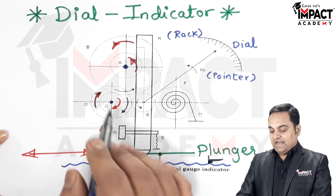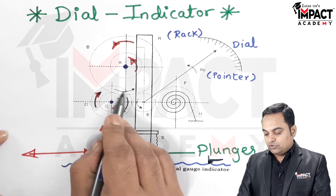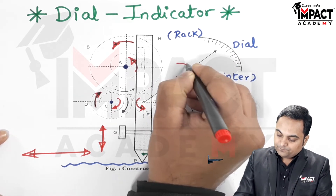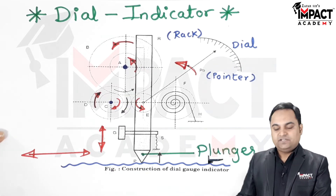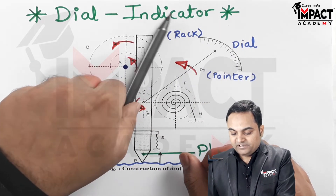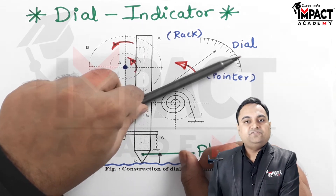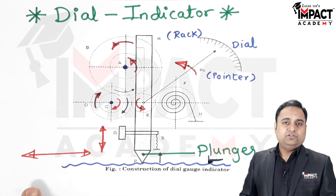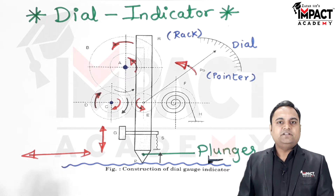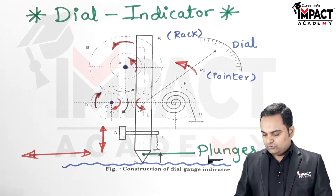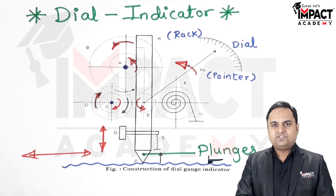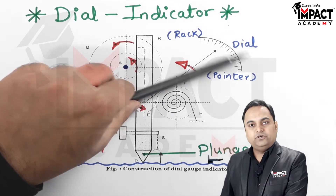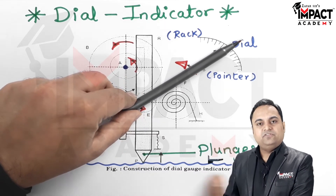Since C and D are on the same shaft, D also rotates clockwise. D is in mesh with gear E, so E rotates anti-clockwise, and the pointer moves in an anti-clockwise direction. When the pointer shifts from the zero position, it means there is waviness present and the surface is not entirely flat. The dial indicator is a gauge — it shows whether the surface is flat or not. If the pointer is at zero, the surface is perfectly flat.